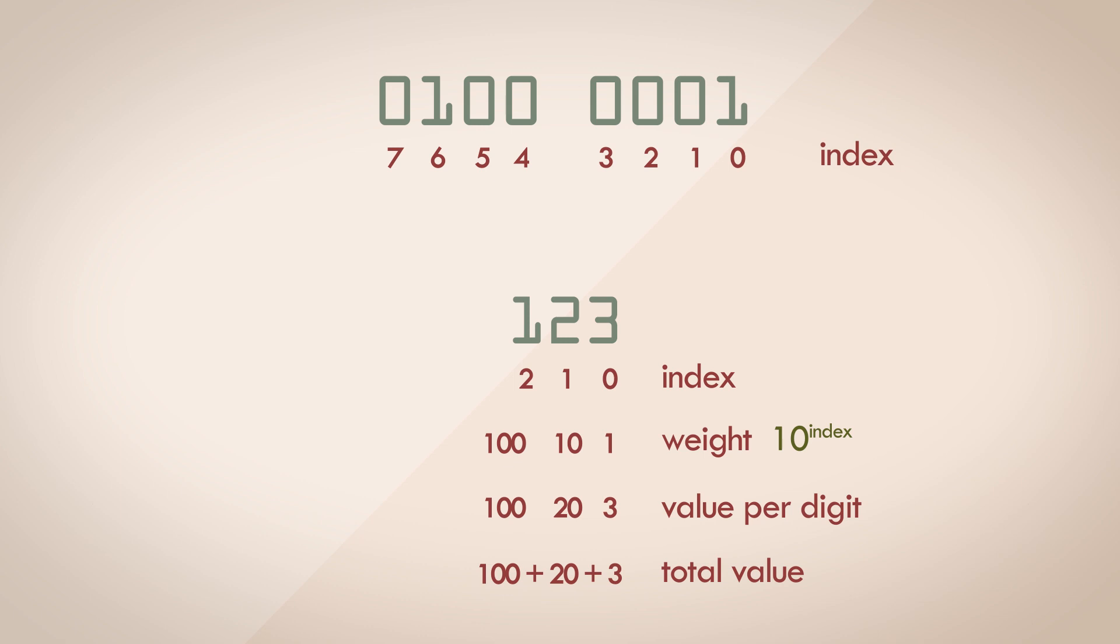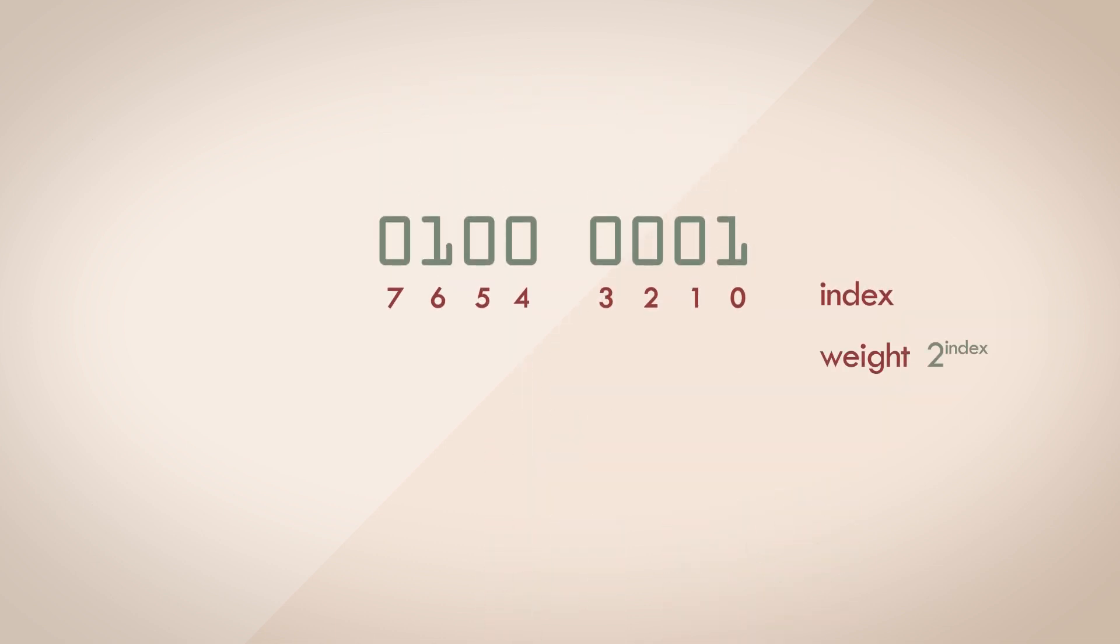These sort of verbose calculations aren't very useful when you're working within the same number system. But when you're converting between two number systems, it's quite useful. In our case, except for the 0th digit and the 6th digit, the rest of the digits are 0. Anything multiplied by 0 is 0 so we can ignore them. The 0th power of 2 is 1 and the 6th power of 2 is 64. So just add the results together and you get the decimal number 65.